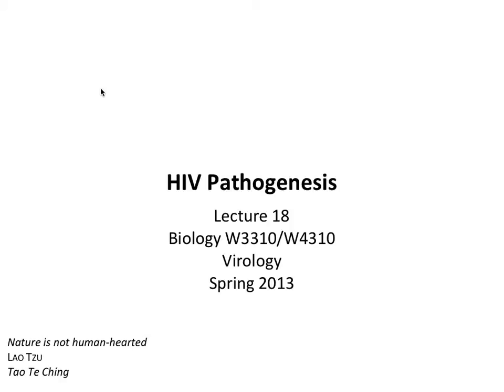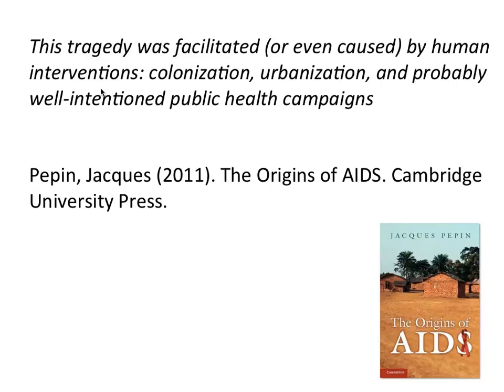Good afternoon everybody. In this course we don't usually talk about individual viruses, but today is an exception. Today we're going to talk about HIV and AIDS, because this is really the virus infection of our generation and the virus itself is amazing. Let's start with an excerpt from a book by Jacques Tatin, 'The Origin of AIDS.' He says this tragedy - the AIDS pandemic - was facilitated or even caused by interventions: colonization, urbanization, and probably well-intentioned public health campaigns.